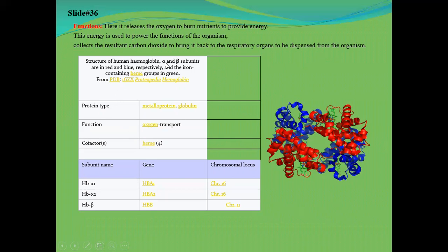Hemoglobin alpha and beta subunits are shown in red and blue color respectively, and the iron-containing heme group is shown in green.